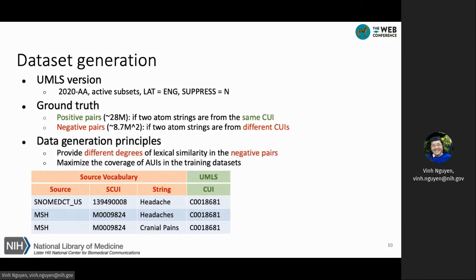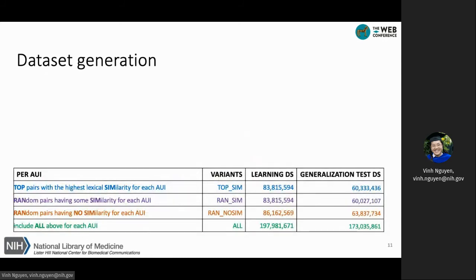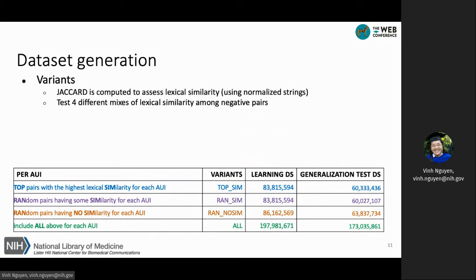For generating the dataset, we follow two principles. The first principle is to use different degrees of lexical similarity among the negative pairs. We compute Jaccard similarity to assess lexical similarity and created four different variants. For the TopSame variant, we select the top pairs with the highest lexical similarity between AUIs. For the RanSim variant, we randomly select pairs with some similarity between the two AUIs. For RanNoSim, we randomly select pairs that have no similarity between them at all.